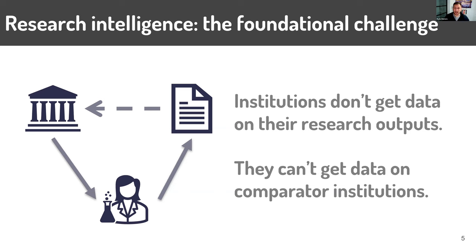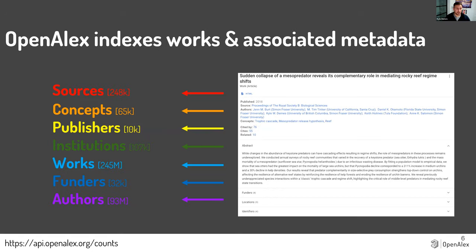That's where OpenAlex comes in — it's a really large-scale database that indexes works. Currently there are 245 million academic works in the database, with metadata scraped to get information on who the authors are, what the affiliations are, where they're publishing, and who funded it. There are currently 107,000 institutions indexed. At the bottom left you'll see an API call you can use at any point to check the current stats as they change.